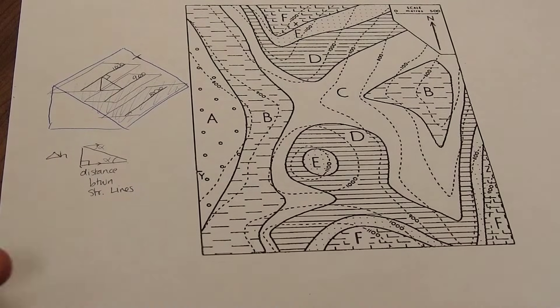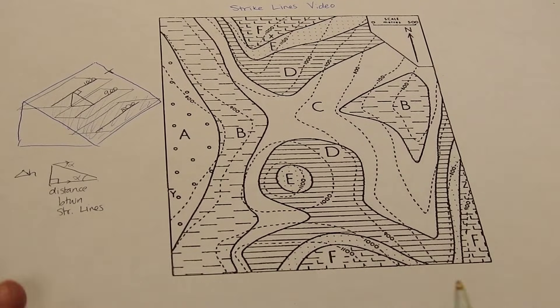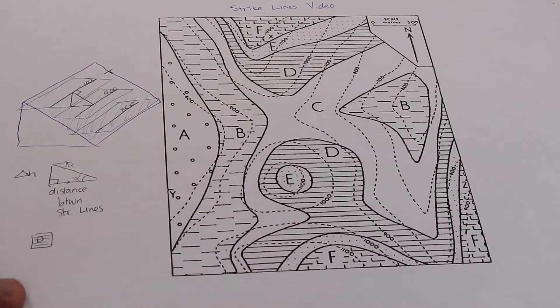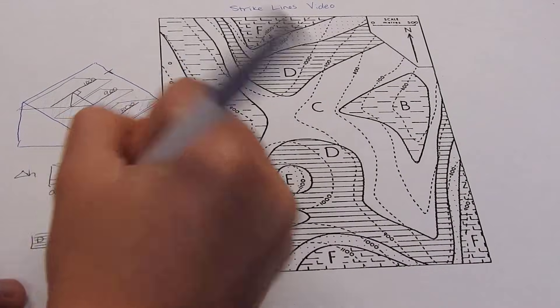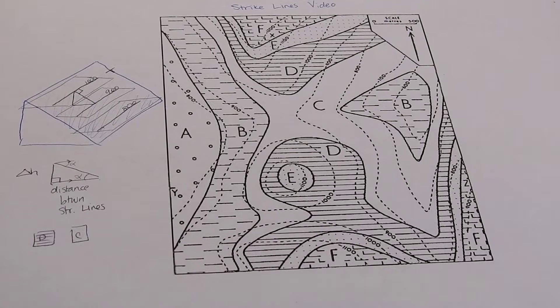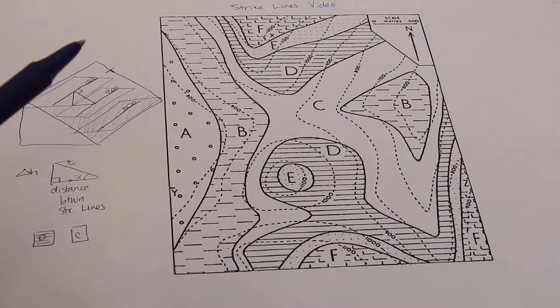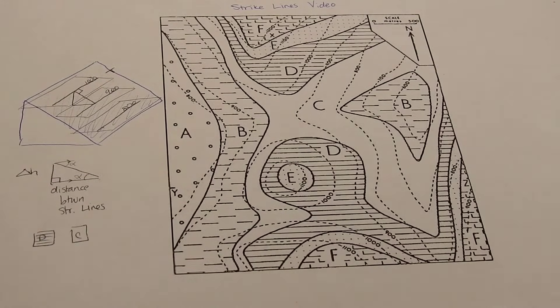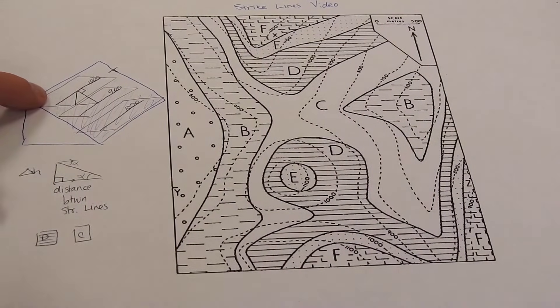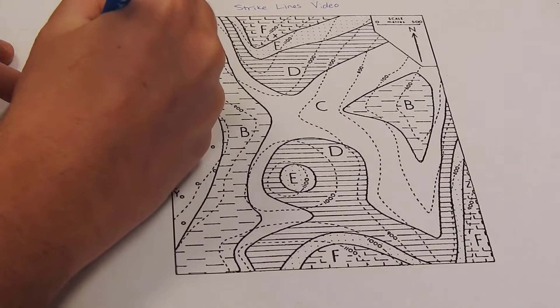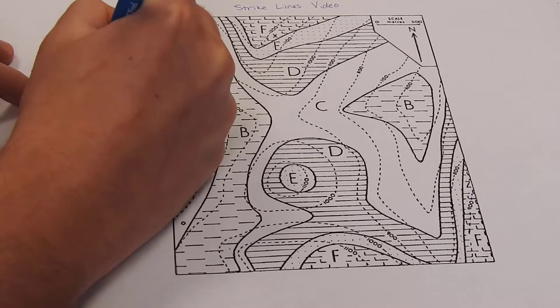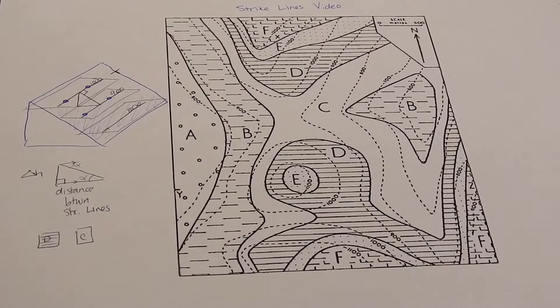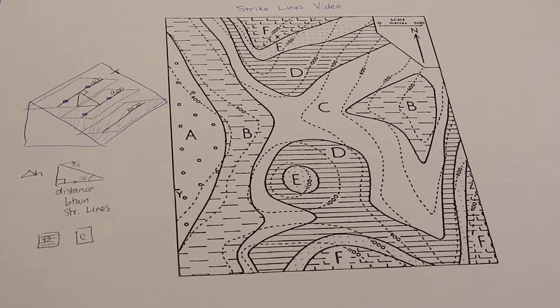So let's go ahead and try it in this drawing. So here again, we're looking for the contact between D and C. So what we need to do is find a place where we can locate an exact elevation along those contacts. And to make a line, we need two points so that we can connect the straight line between those points.